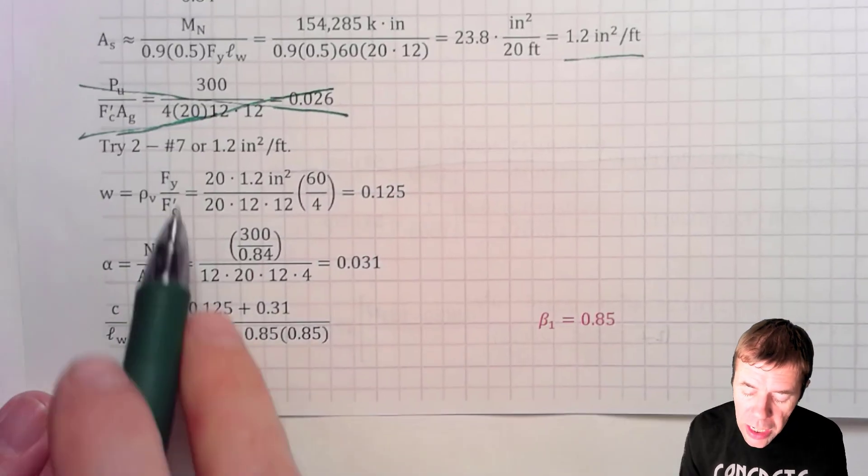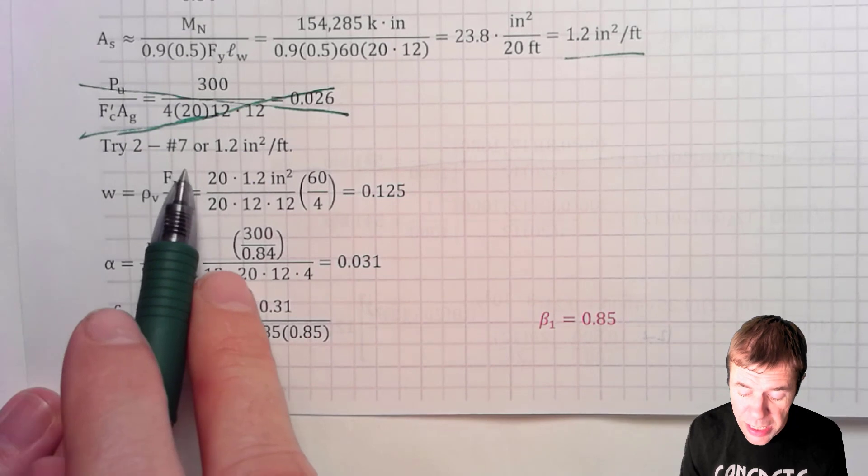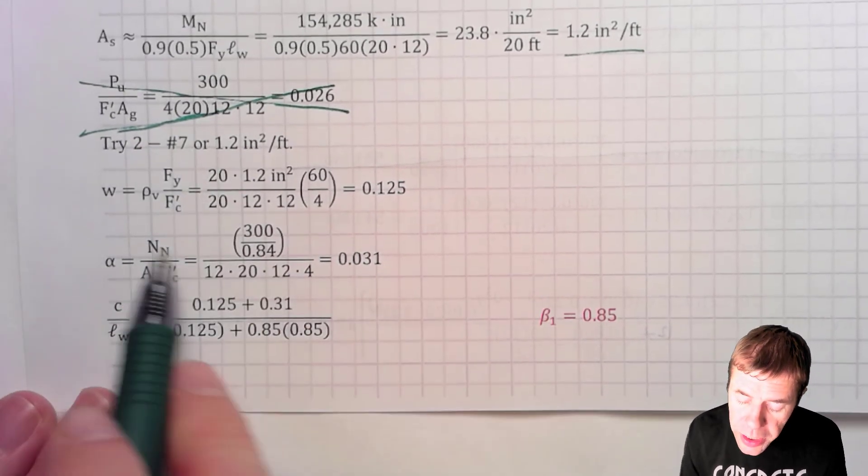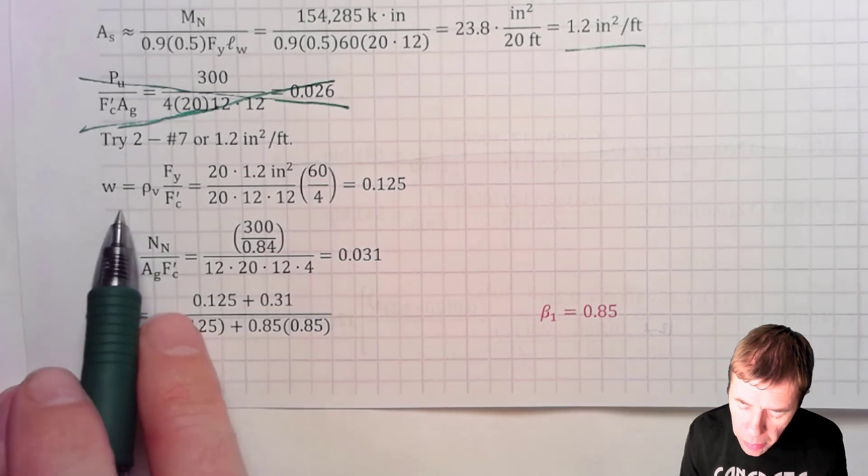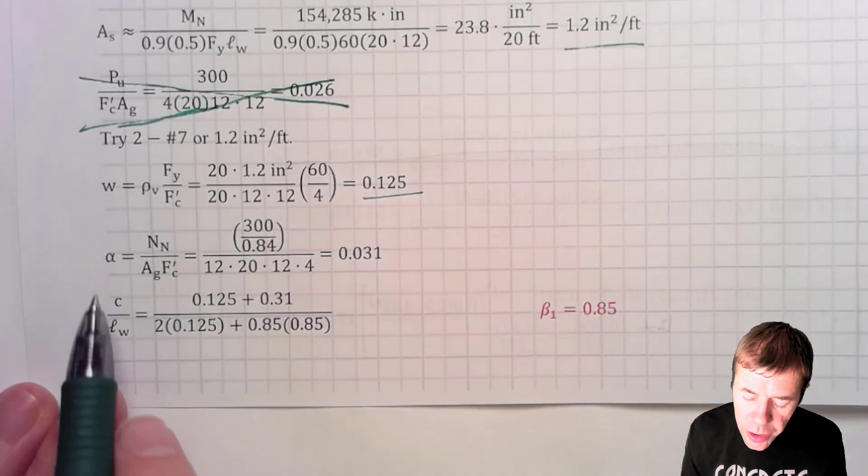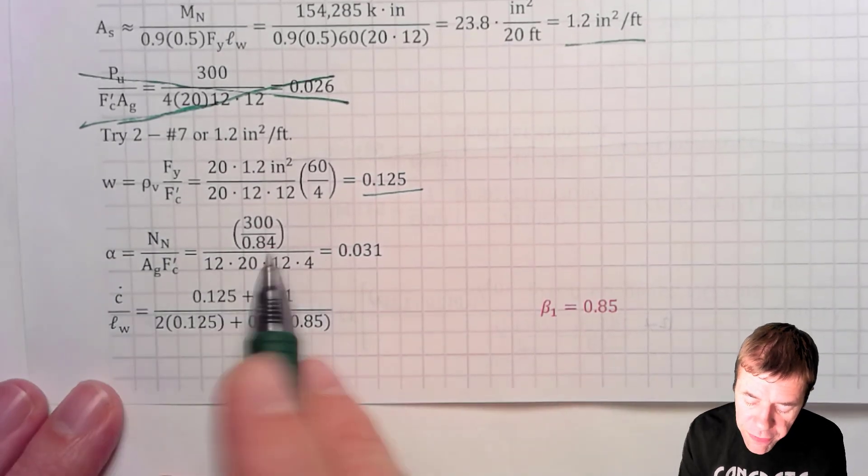And we're going to get 1.2 inches squared per foot for our wall. So we're going to try two number seven bars. That happens to give me exactly 1.2 inches squared per foot. So I'm going to plug in for my W here. I plug in my equation. I get 0.125. I plug in here for my alpha.